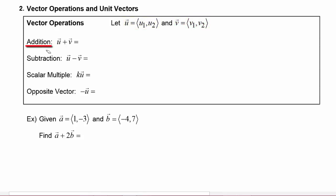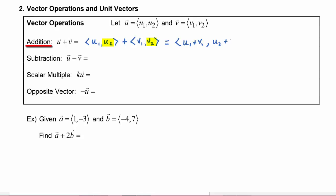We can do vector addition of vector u plus vector v by adding up their horizontal and vertical components. Substituting in, vector u is (u1, u2) and vector v is (v1, v2). To find the sum, the horizontal component will be u1 plus v1, and the new vertical component will be u2 plus v2.